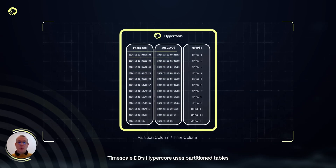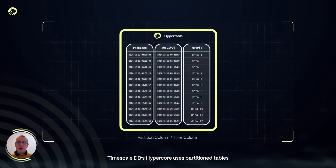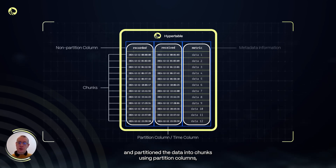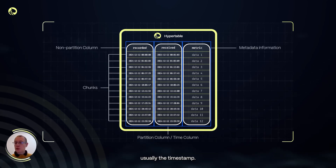TimescaleDB's HyperCore uses partition tables and partitions the data into chunks using partition columns, usually the timestamp.